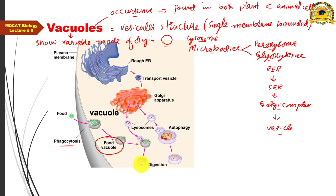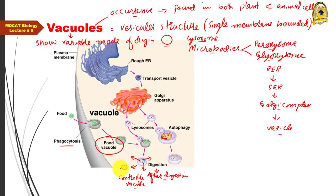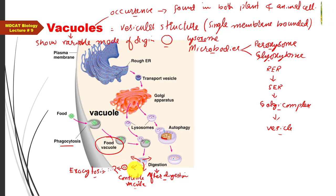After formation, the food vacuole fuses with a lysosome to form a secondary lysosome, where digestion occurs. After digestion, the digested products are absorbed into the cytoplasm. The remaining vesicle contains only undigested waste, and such an undigested waste-containing body is known as a contractile vacuole.